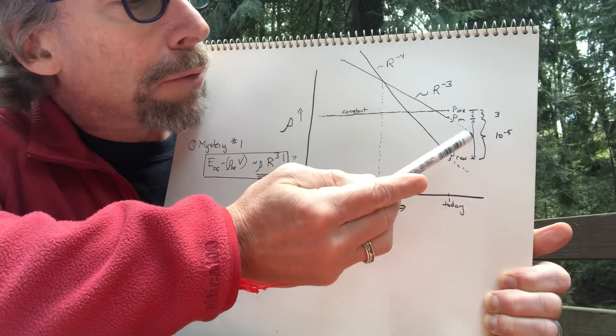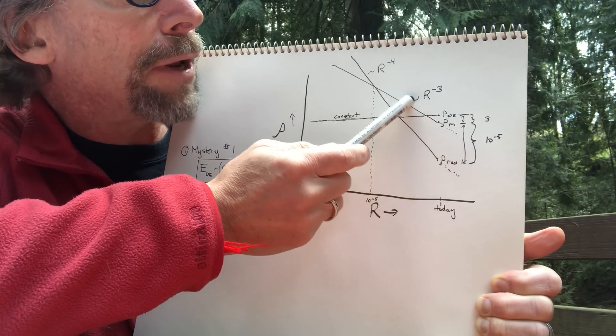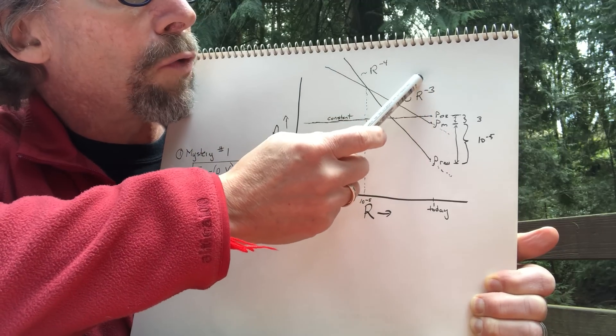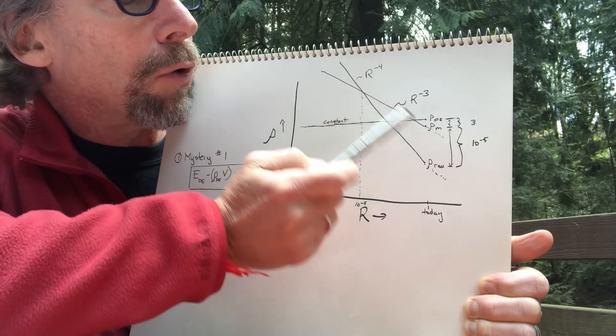And I remind you that the matter density is some number here, and the matter density falls as one over the volume or one over the cube of the radius as the universe grows.